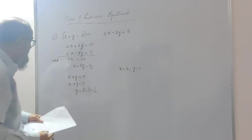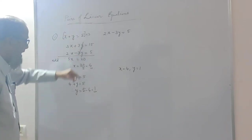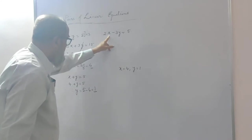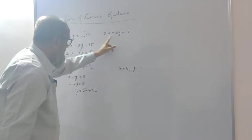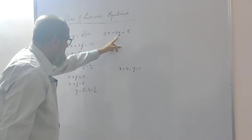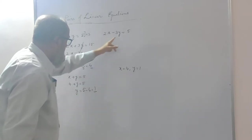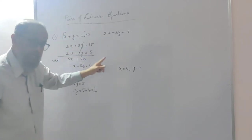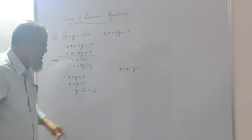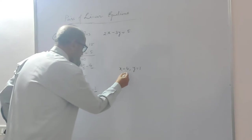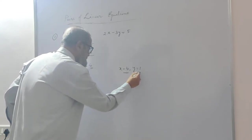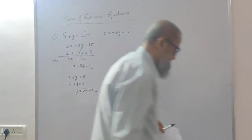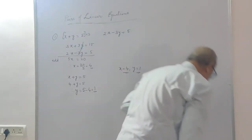You can verify the answer. 4 plus 1 is 5. For the second equation: 2 into 4 is 8, minus 3 into 1 is 3, so 8 minus 3 is 5. Both equations are satisfied by these values of x and y. Hence the answer is correct. We are sure to get 2 marks for that. This is the first problem.